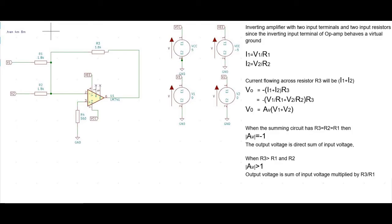An inverting amplifier with two input terminals and two input resistors. Since the inverting input terminal of the op-amp behaves as a virtual ground, the current across resistor R1 is given by I1 = V1 / R1, and the current across resistor R2 is given by I2 = V2 / R2. Then the current flowing across resistor R3 will be I1 plus I2.